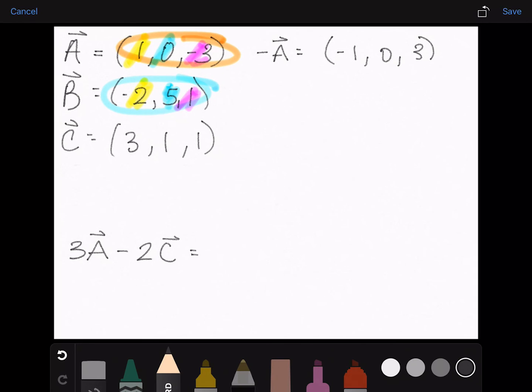So when we're multiplying a vector, that's also called scaling. We can just take 3 and multiply it by each of the components, so 3A will be 3, 0, negative 9. And 2C